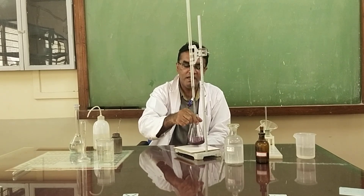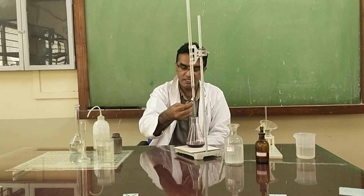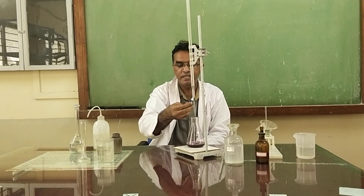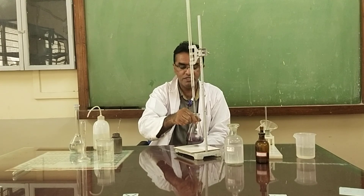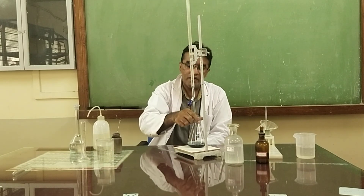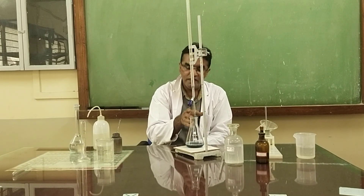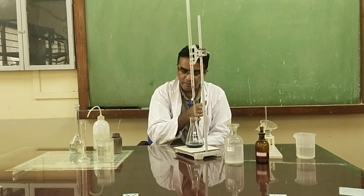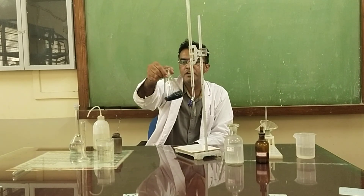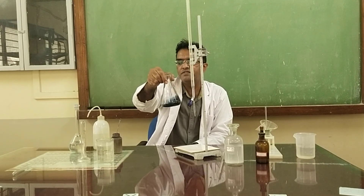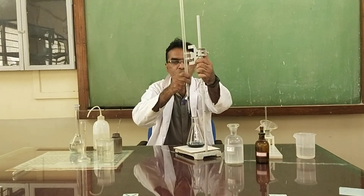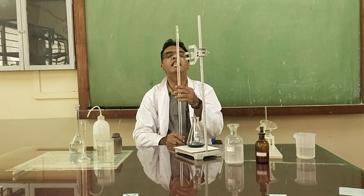By finding how much EDTA is exactly required to react with all the metal ions in the hard water, and knowing the volume of EDTA required for 25 mL of hard water, we can calculate the total hardness using the suitable formula. Once you get the blue color, note down the end point — for this trial it is 11.5 mL.